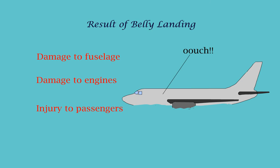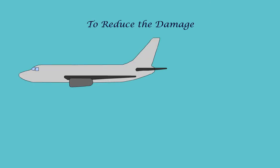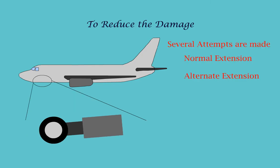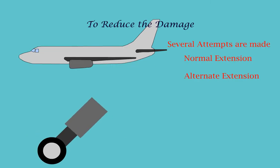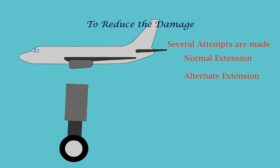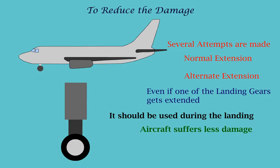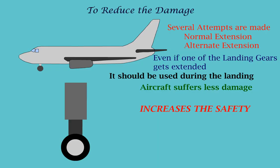To reduce the damage, several attempts are made in the normal extension and the alternate extension of the landing gear. Even if one of the landing gears gets extended, it should be used during the landing so that the damage to the aircraft is reduced and it increases safety.